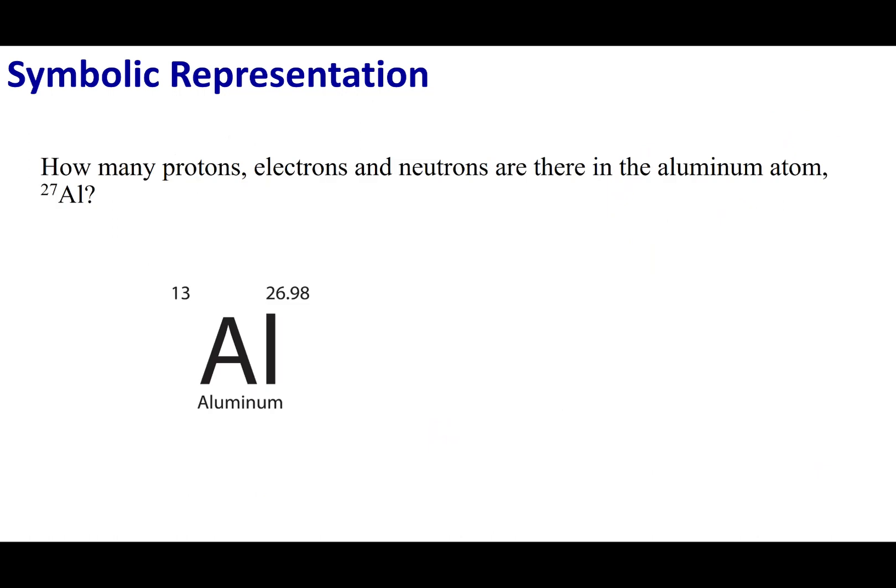I'm going to go ahead and present you a real quick question. How many protons, electrons, and neutrons are in the aluminum atom, specifically aluminum 27? Go ahead and write this on a piece of scratch paper. Mark the right answer on your quiz, and we'll go ahead and discuss this.